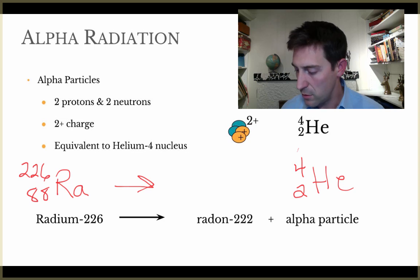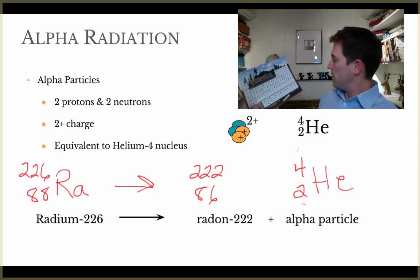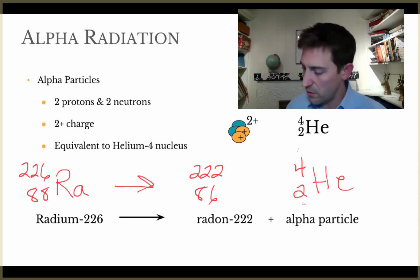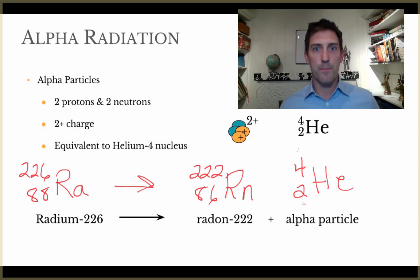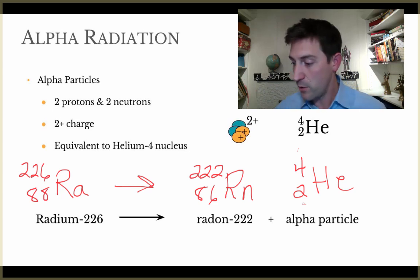Well, 226 minus 4 equals 222. 88 minus the 2 over here equals 86. I look on my trusty periodic table, and 86 over here is radon Rn. First step of radioactive math. So what we're saying is radium-226 will decay into radon-222, and it'll shoot off this alpha particle from the nucleus.